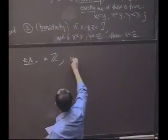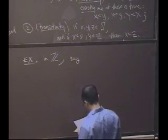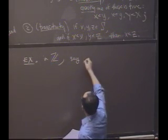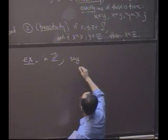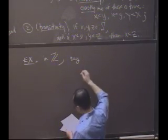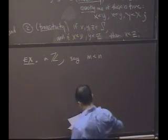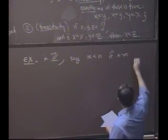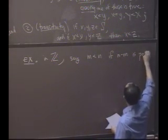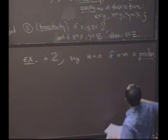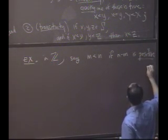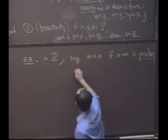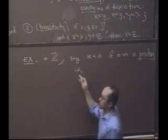So in Z, we're going to say an integer. We'll say, I'll write this: M is less than N if N minus M is positive. That's the correct definition. And what positive means is, i.e., it just means, in other words,